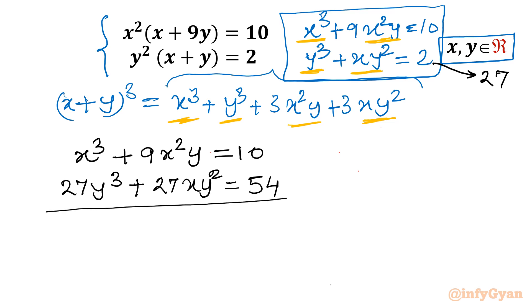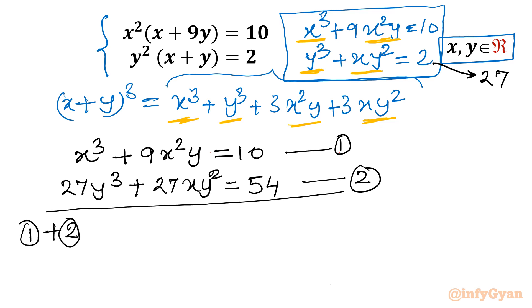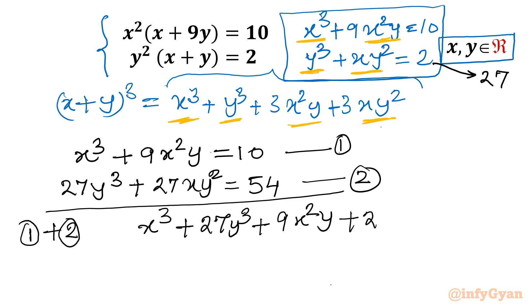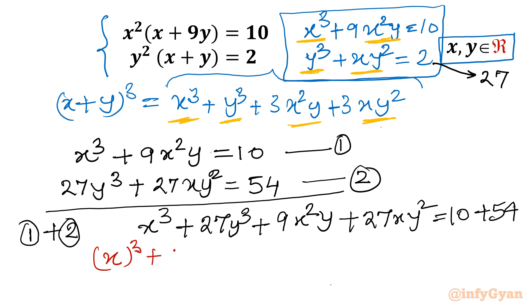Now let us add both equations. Adding equation 1 and equation 2 gives: x³ + 27y³ + 9x²y + 27xy² = 64. Now I will frame this using the cubic identity (a + b)³. We can write x³ as x³, and 27y³ as (3y)³.